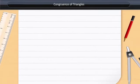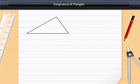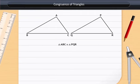Congruence of triangles. Two triangles are said to be congruent if their corresponding sides have same length and corresponding angles have same measure.